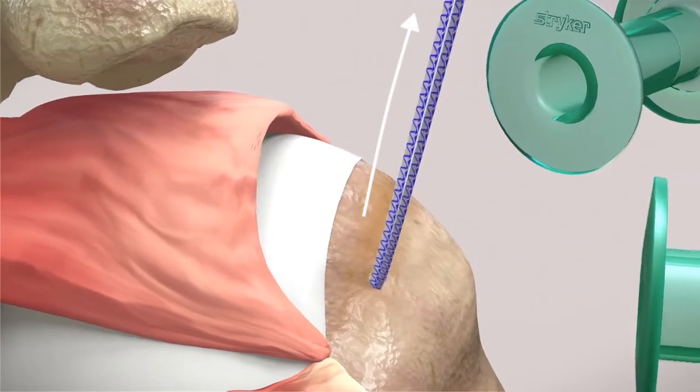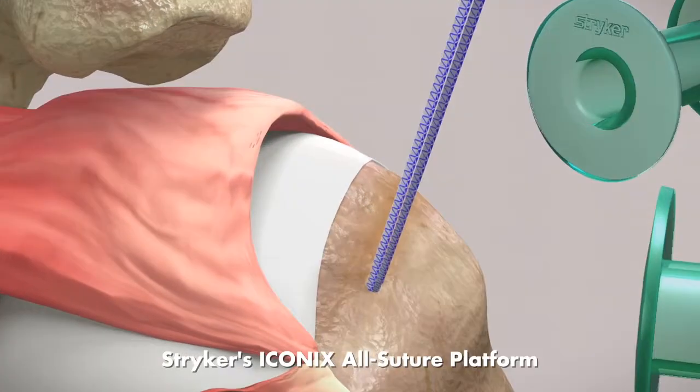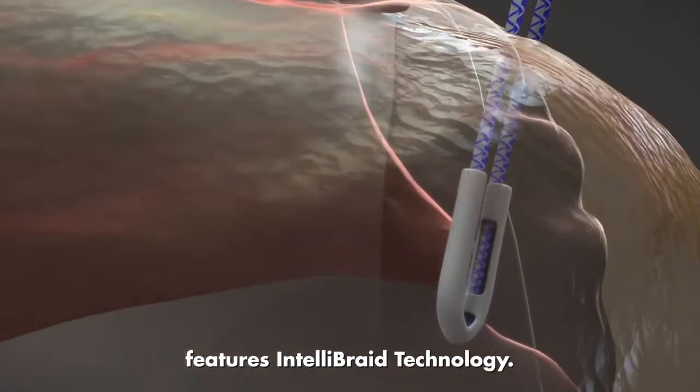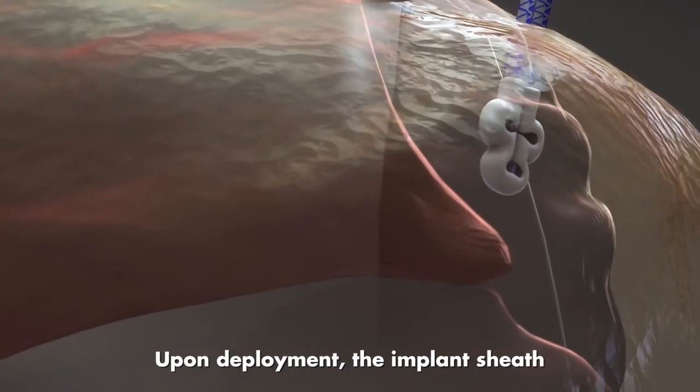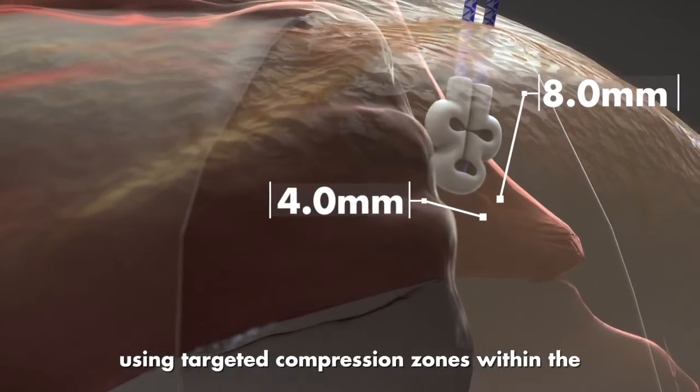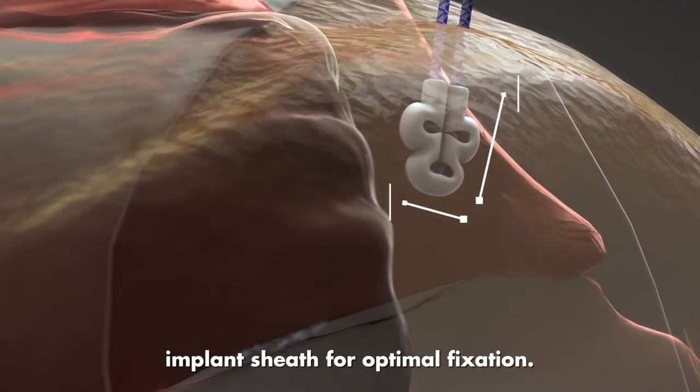Stryker's ICONICS all-suture platform features IntelliBRAID technology. Upon deployment, the implant sheath creates a bunching effect, using targeted compression zones within the implant sheath for optimal fixation.